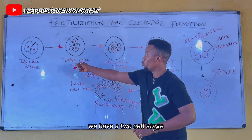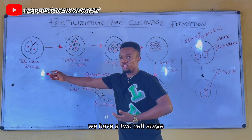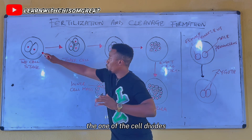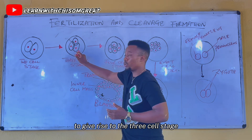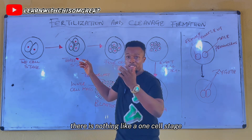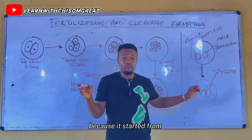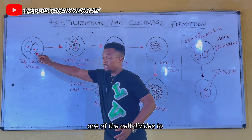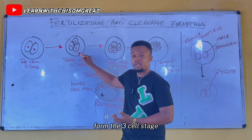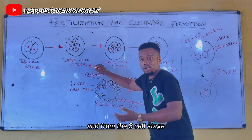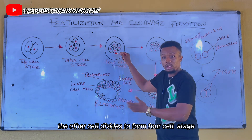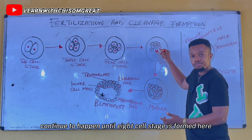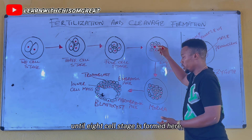Looking at the stages: we have a two-cell stage. After the two-cell stage, one of the cells divides to give rise to a three-cell stage. There is no one-cell stage because it starts from the male and female pronuclei joining together. From the three-cell stage, the other cell divides to form a four-cell stage. This continues until the eight-cell stage is formed.